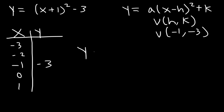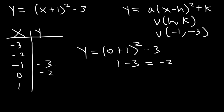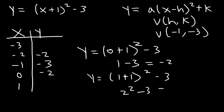So let's plug in 0. When x is 0, what is the value of y? 1 squared is 1. 1 minus 3 is negative 2. So when x is 0 or negative 2, y is going to be negative 2. Now what about when x is 1? 1 plus 1 is 2, 2 squared is 4, and 4 minus 3 is 1. So that's it — now let's go ahead and graph it.